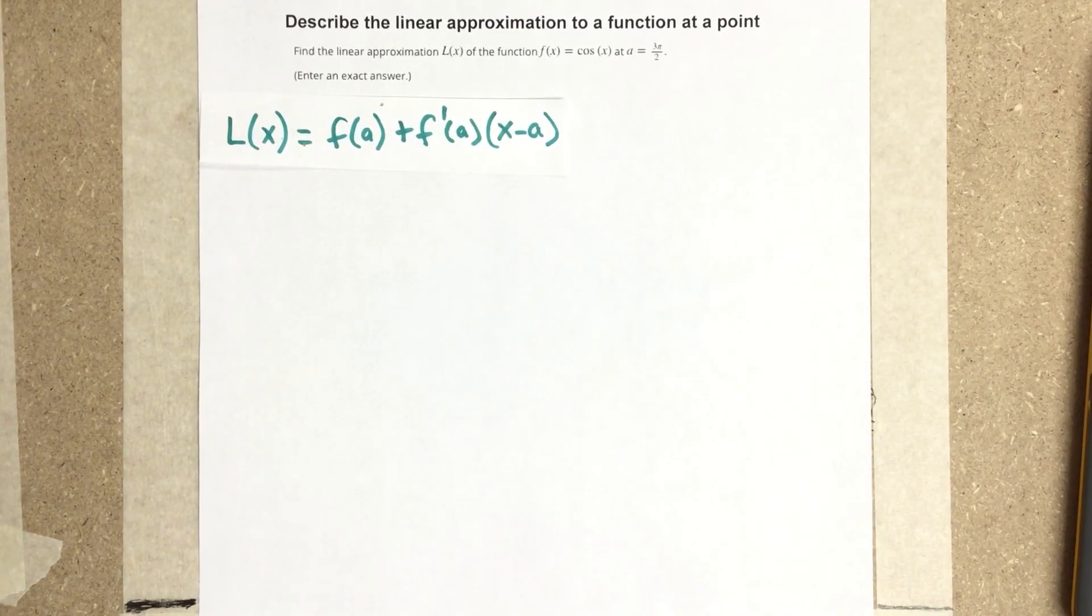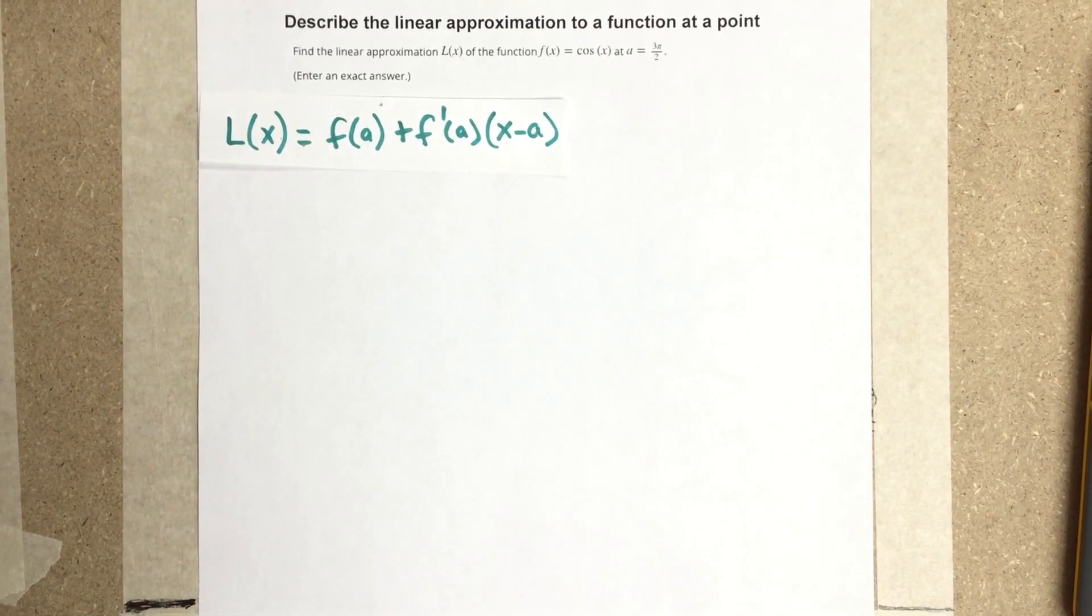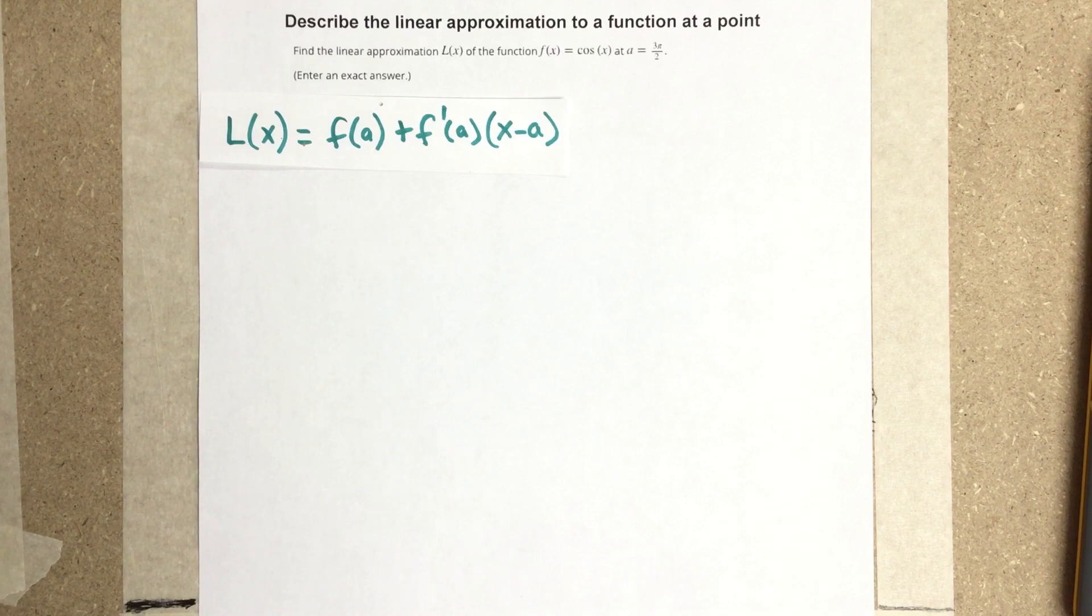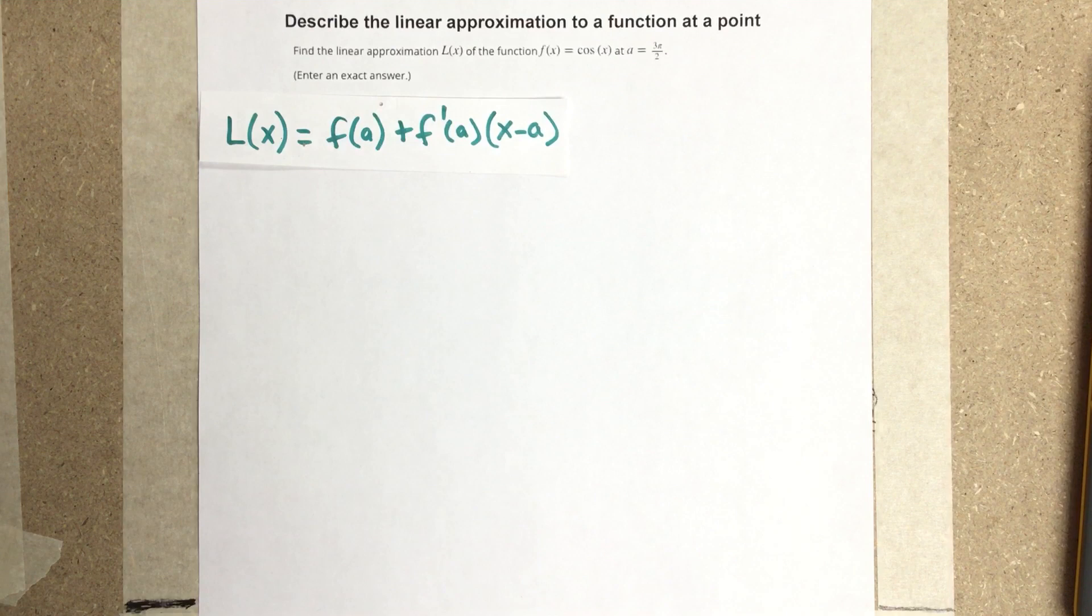In this problem, we're going to describe the linear approximation to a function at a point. It says find the linear approximation L(x) of the function f(x) = cos(x) at a = 3π/2.